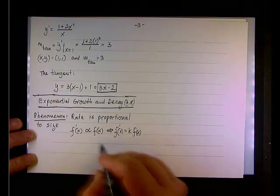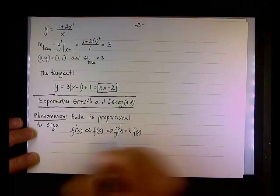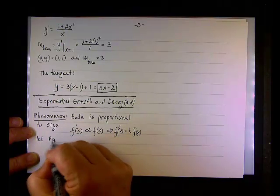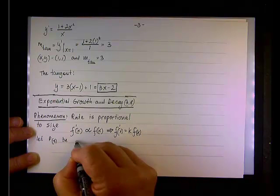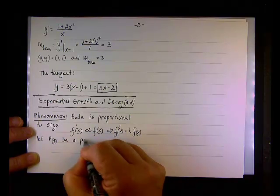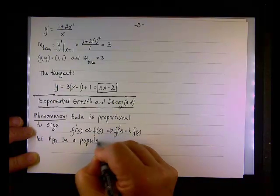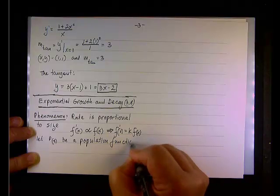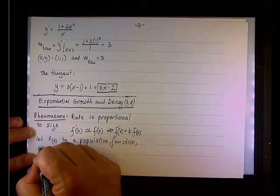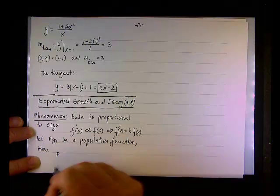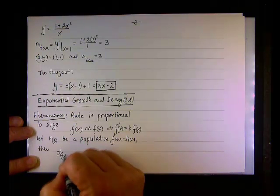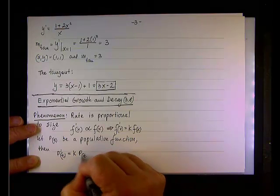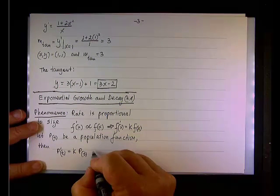When it comes to population, then we can say that if let p of t be a population function, then in this case we're going to say that p prime of t is some constant times p of t.